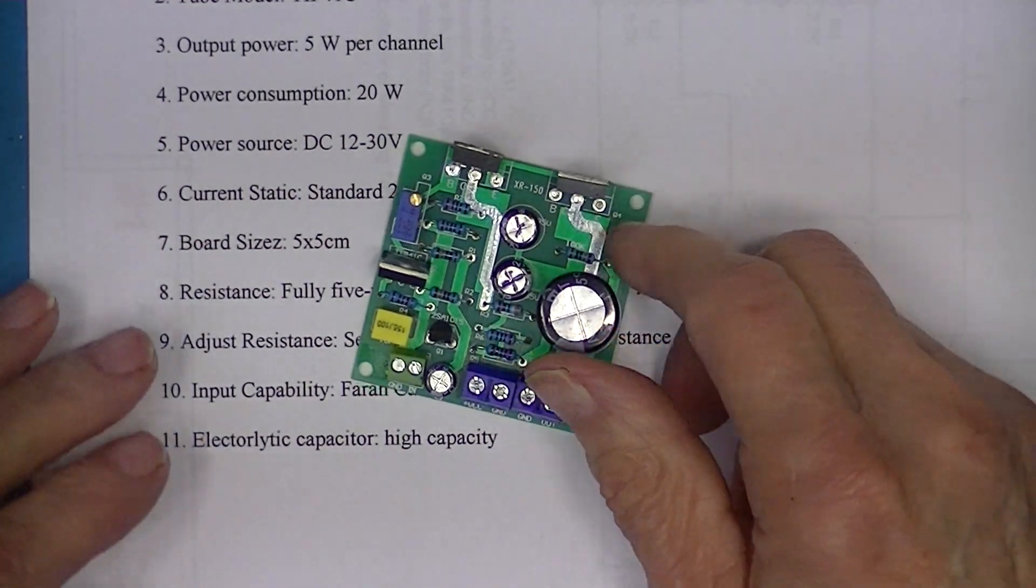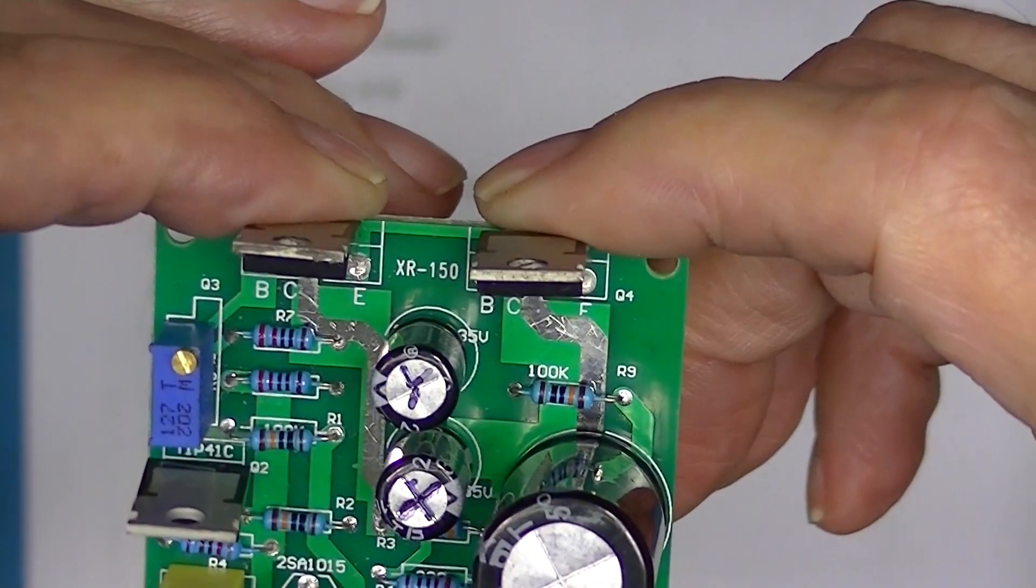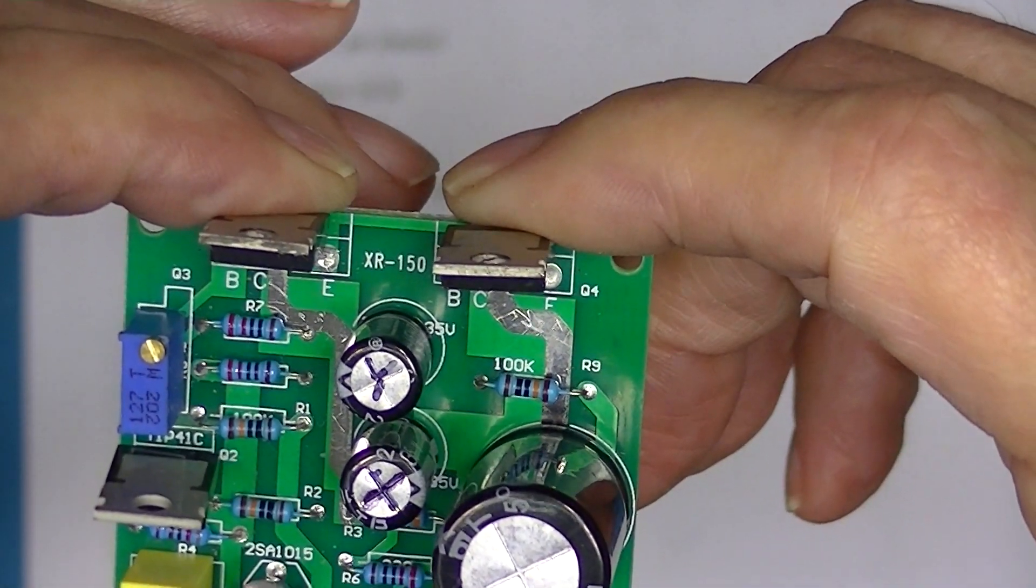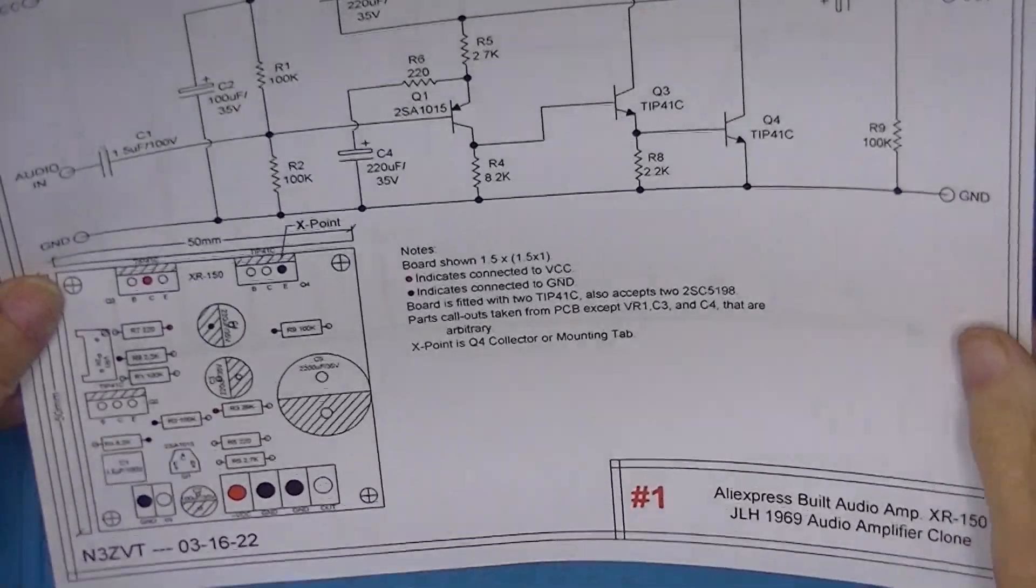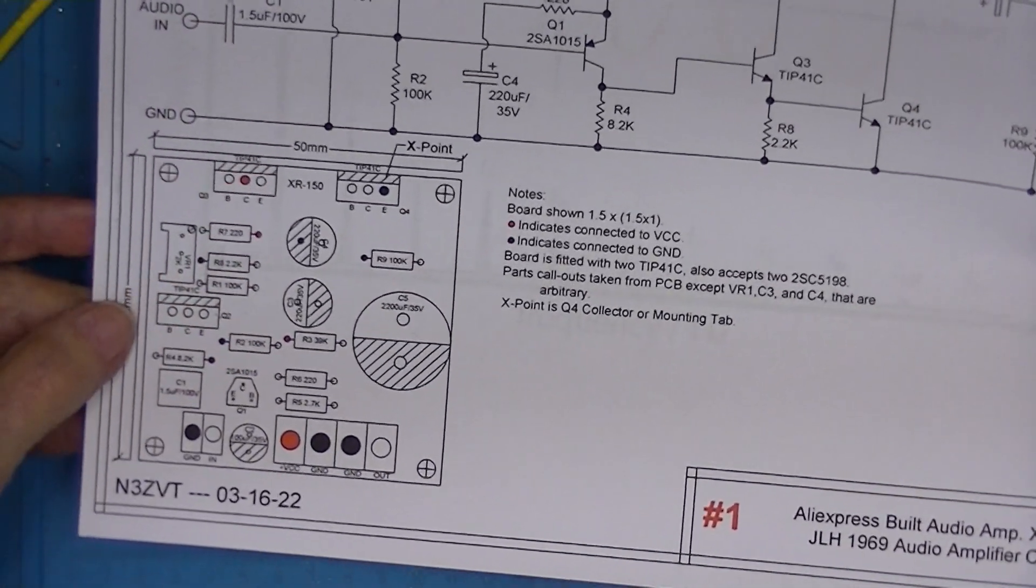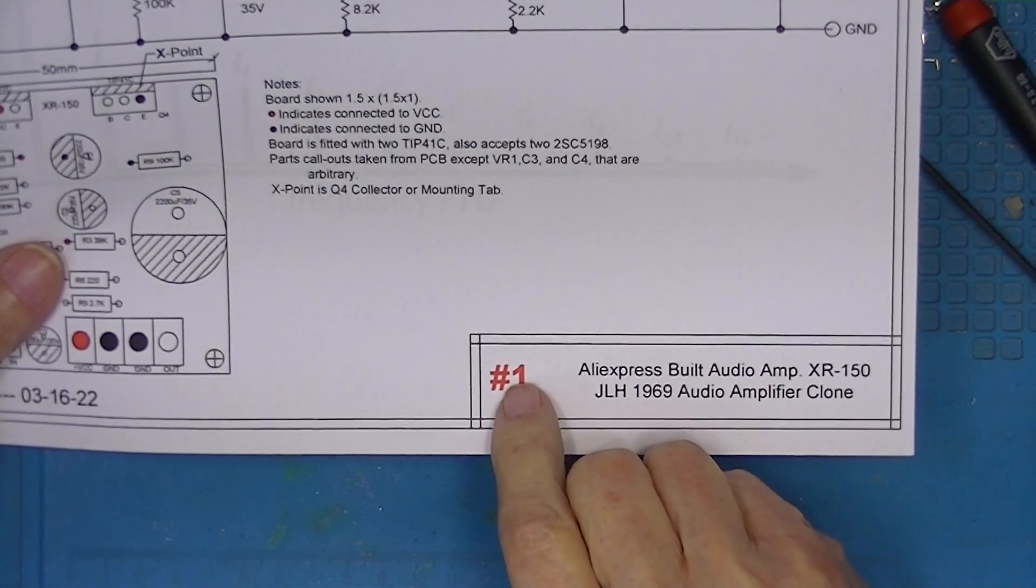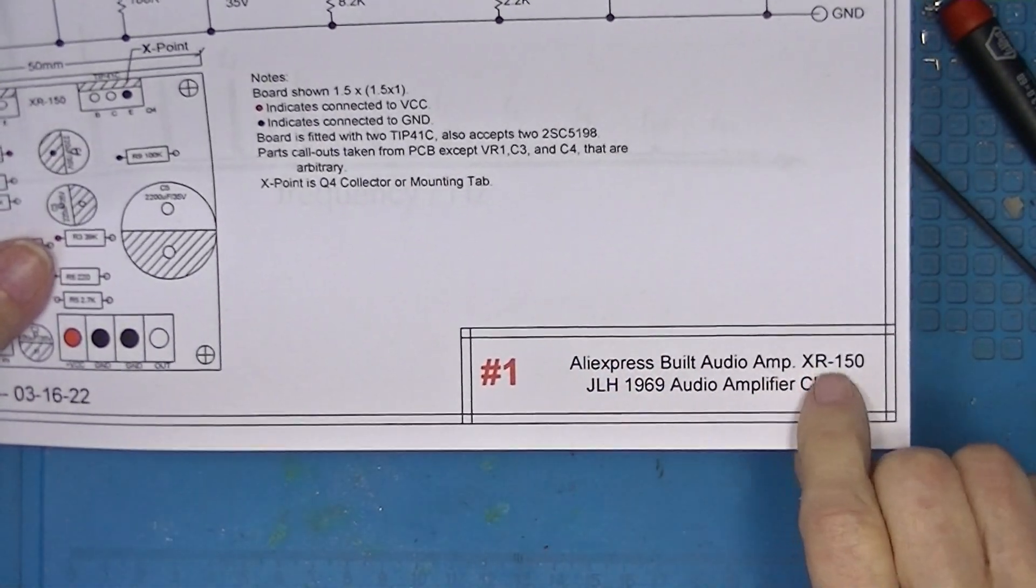The only identifying mark I can find on this board is this XR150 marking. I made a drawing of this amplifier, an electrical drawing and a drawing of the board. I'm calling it amplifier number 1 XR150.